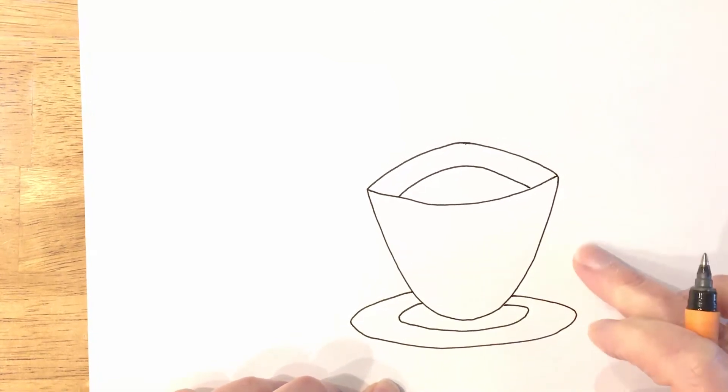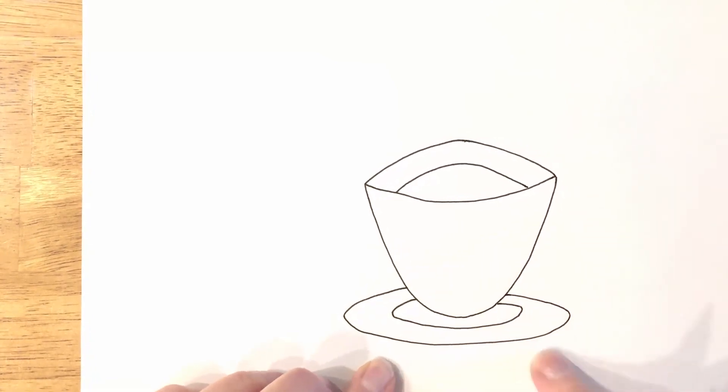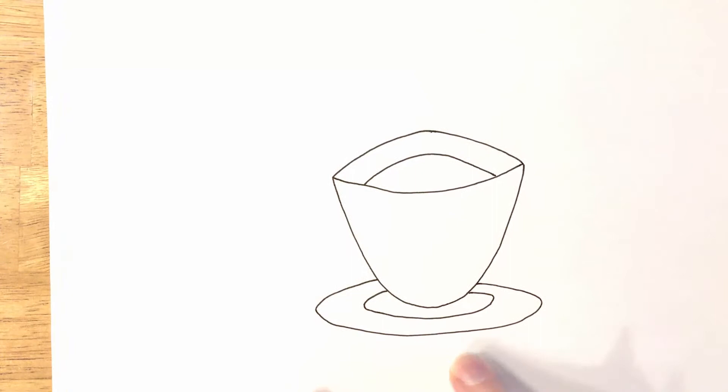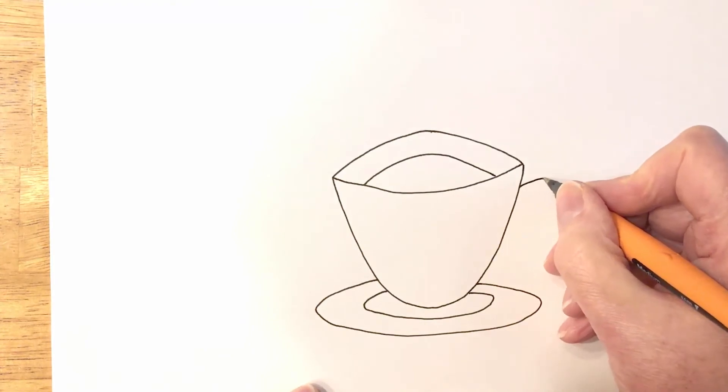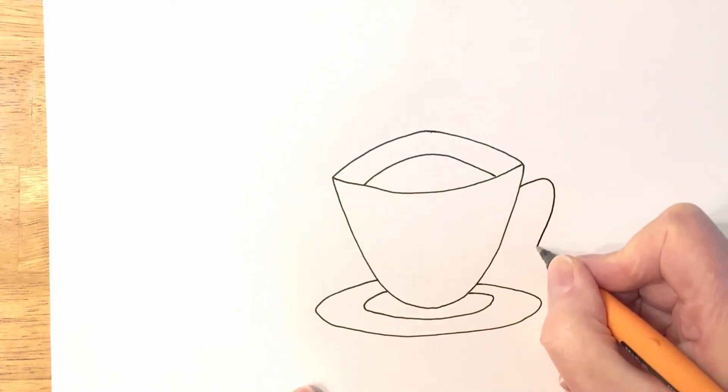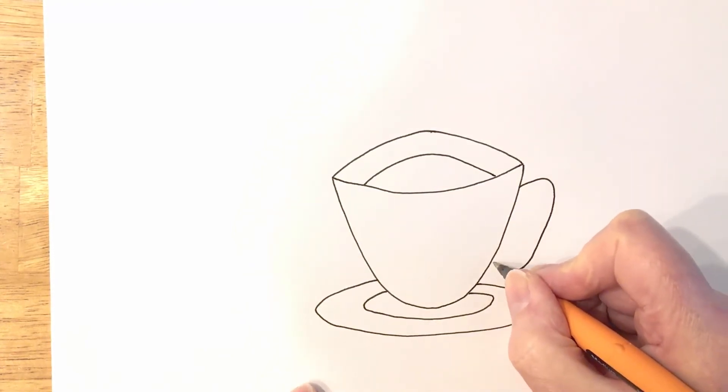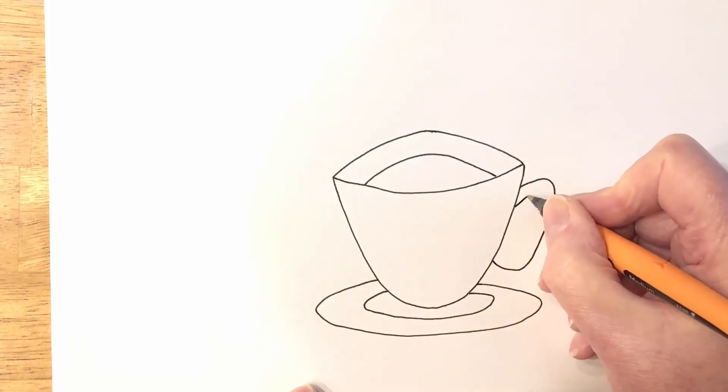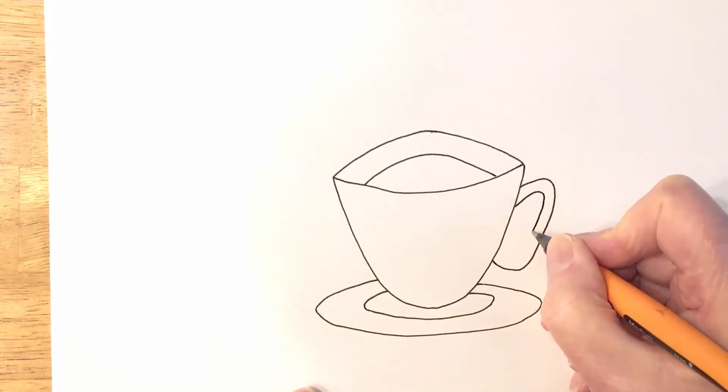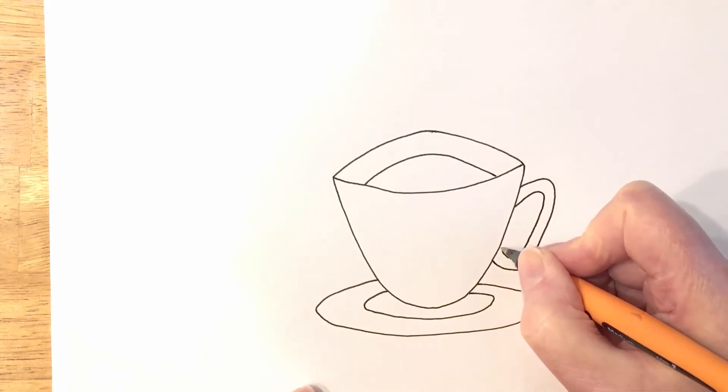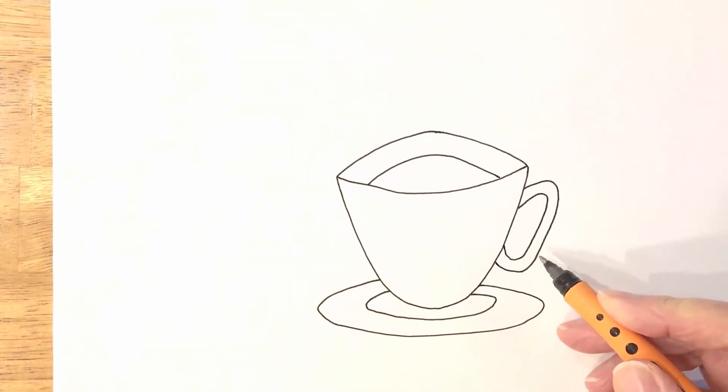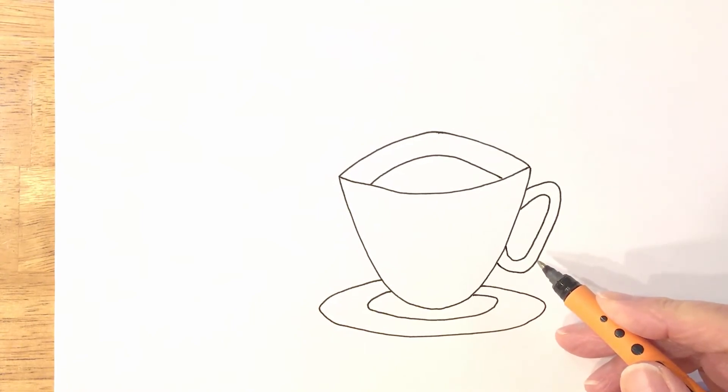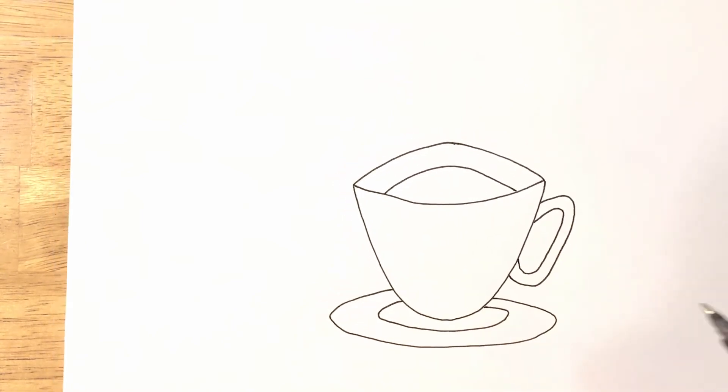Now I'm going to put the handle in. I find it handy to draw the saucer first because then it's really easy for me to see where my handle can go. So I'm going to draw the handle here. The handle's going to be tapered just a little bit, so it's a bit thicker at the ends where it joins the cup and a little bit thinner on the actual handle. So now let's draw our tea bag.